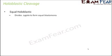In holoblastic cleavage, there are two categories. The first is equal holoblastic, which means complete cleavage such that the zygote is divided completely into two blastomeres that are equal in size. This is called equal holoblastic cleavage, and human beings are an example where this type of cleavage takes place.